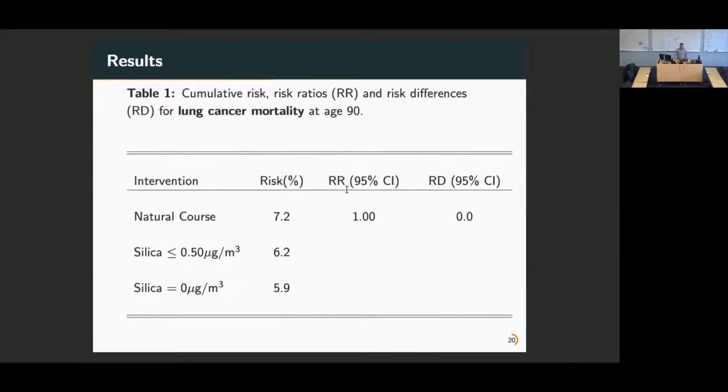I'm going to jump straight into results. This is the table for lung cancer mortality. The first line is what actually happened. At age 90, the cumulative incidence or cumulative risk in this cohort for lung cancer mortality was 7.2%. We predicted what the risk would have been under those three interventions. It drops to 6.2 for a limit of 50 micrograms, and it drops a little further to 5.9 if we completely remove the exposure. Using those risk estimates from the first column, we can construct risk ratios and risk differences. You can see that our interventions are protective, but they're not statistically significant. It's a relatively small cohort, so I think it's mostly due to sample size. There should have been a true protective effect. We know that silica is an identified known carcinogen, so I think the lack of statistical significance is due to the small sample size.